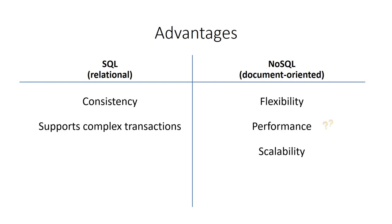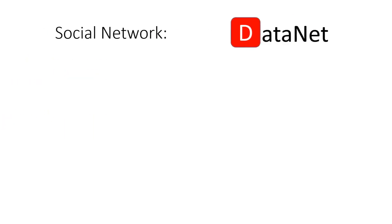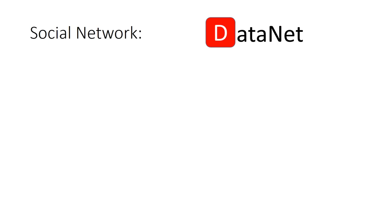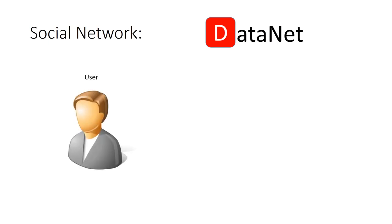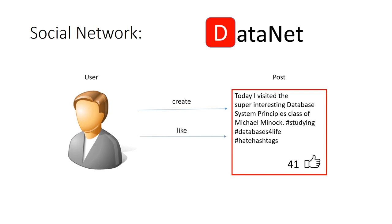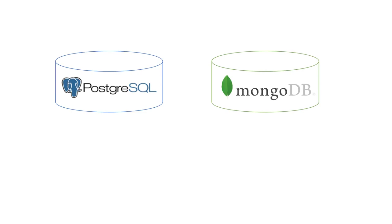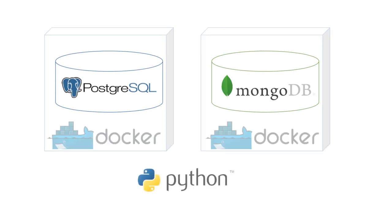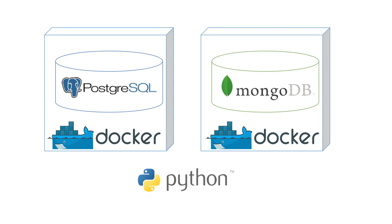Now we want to test if the performance of a NoSQL database is really better for our use cases. For our test, we set up a simplified version of our social network with only accounts, posts, and likes. Accounts have a username and a date of birth. Posts have text content and can be liked by users. This is a typical web application with a lot of read and write operations, but few updates and deletions. For our benchmarks, we used MongoDB and PostgreSQL, set up in Docker containers for a more controlled environment. The benchmarks were implemented in Python.